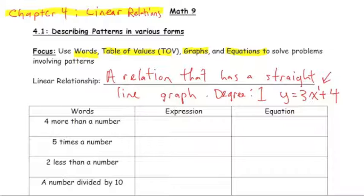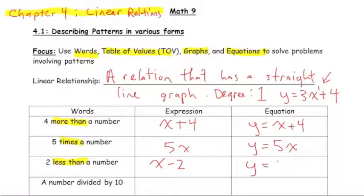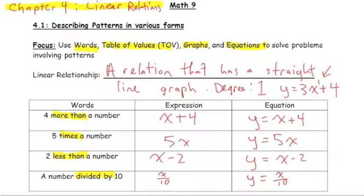The difference between an expression and an equation: we're going to be looking for keywords like '4 more than a number' — that's just taking a number and adding 4 to it. If our number is x, that's x plus 4. To write that as an equation, we set it equal to y. '5 times the number' is 5x, so y equals 5x. '2 less than a number' gives y equals x minus 2. 'A number divided by 10' gives y equals x over 10. An expression does not have an equal sign; an equation does.